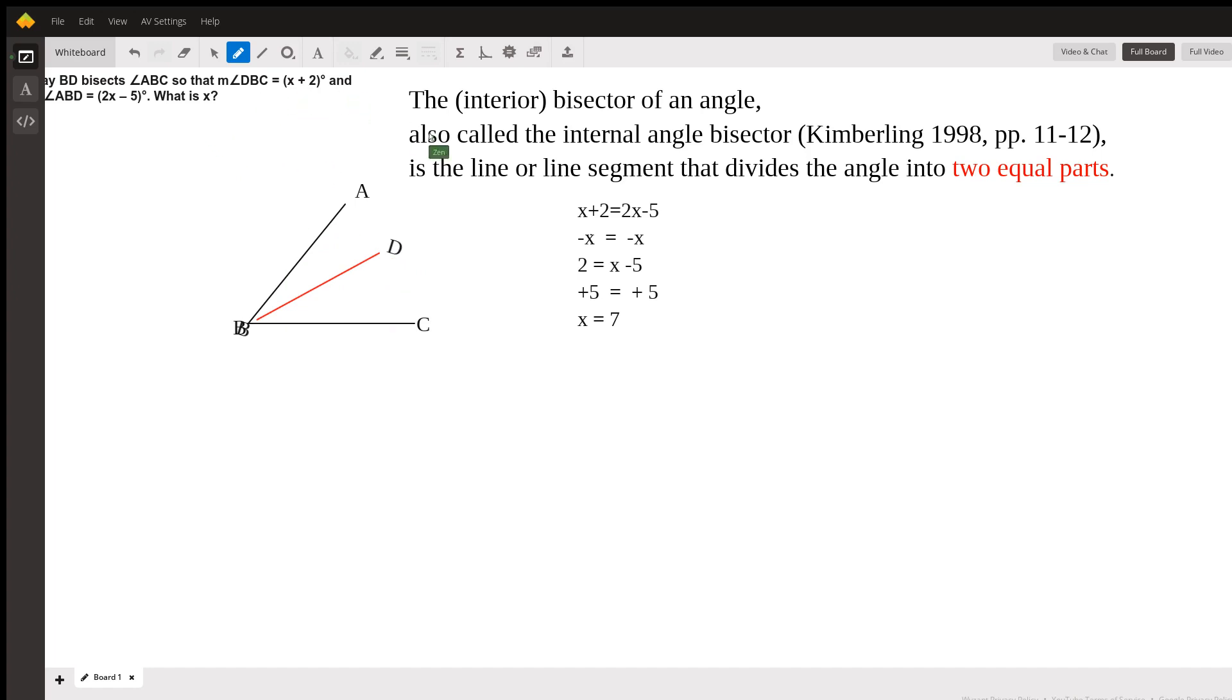So if they're equal, that means x plus 2 is equal to 2x minus 5, and all you have to do is solve for x. Subtract x from both sides, you get 2 equals x minus 5. Add 5 to both sides, you have x equals 7.